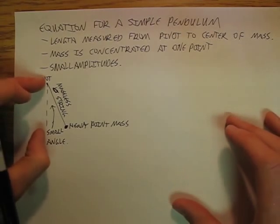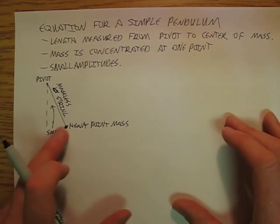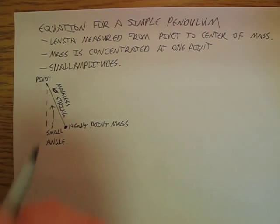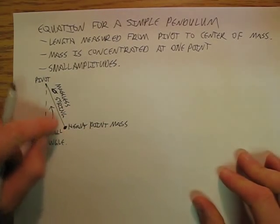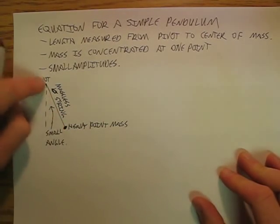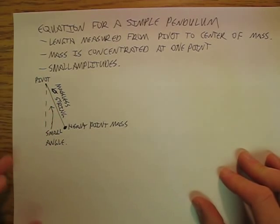We basically have a pivot, we have a heavy point mass, so it's like a whole bunch of mass in one tiny little spot. We have a massless string, which doesn't exist, and then we have small angle.